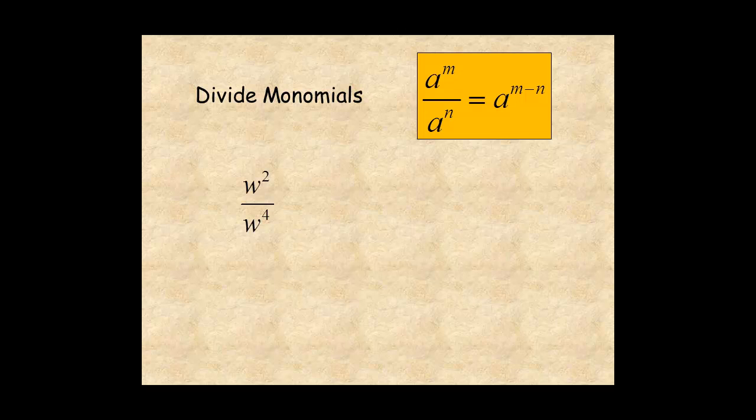In this last example, subtract the exponents, 2 minus 4, for w to the power of negative 2. Now, a negative exponent makes no sense. So, simplify this expression in a different way.